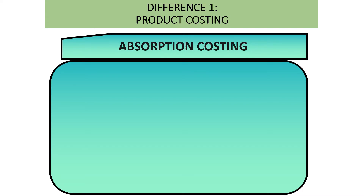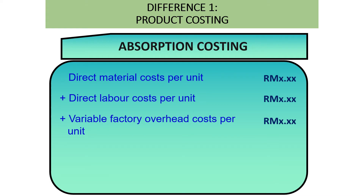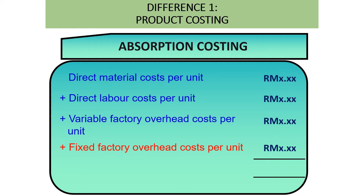The first difference is product costing. Under absorption costing, the product cost per unit is calculated based on direct material cost per unit, direct labor cost per unit, variable factory overhead cost per unit — these three items are referred to as variable manufacturing overhead — plus fixed factory overhead cost per unit, giving a total product cost per unit.